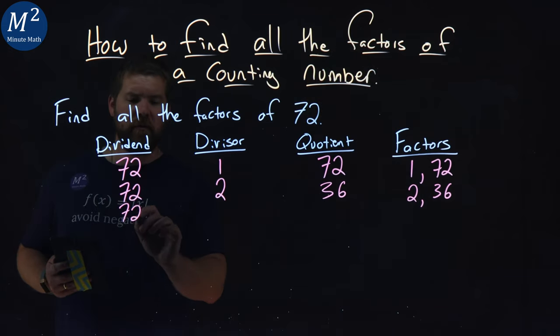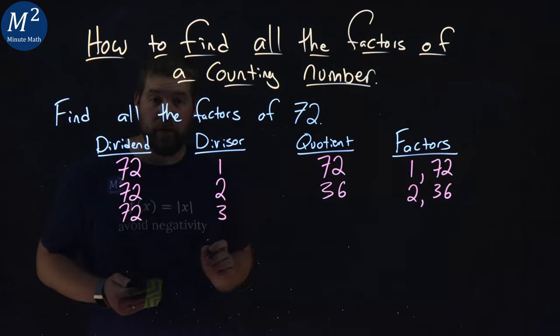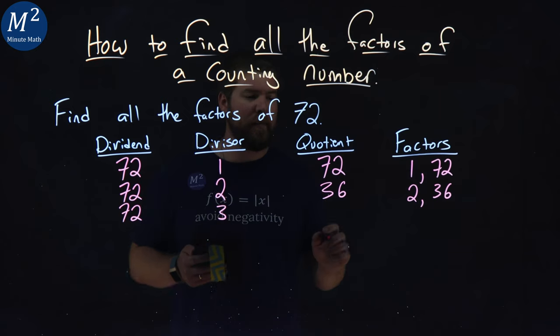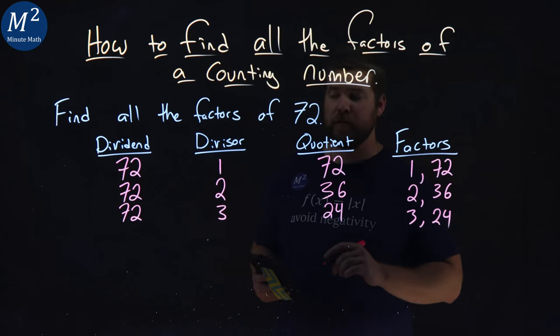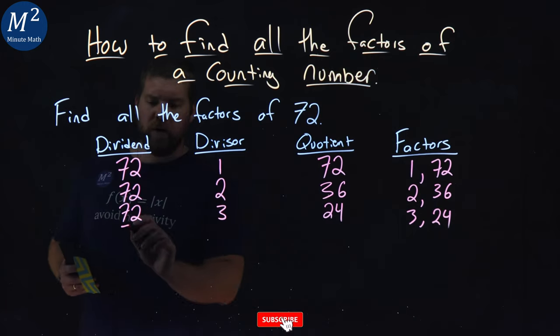Again, 72 divided by 3. What does 72 divided by 3 come out to be? 24. So 3 and 24 are factors. Keep on going.